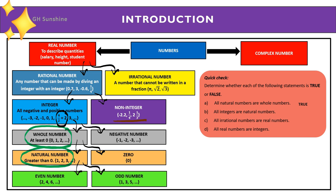Second question: all integers are natural numbers. Looking at the diagram, integers include more than just natural numbers, so the answer is false. Third question: all irrational numbers are real numbers — the answer is true. Fourth question: all real numbers are integers — the answer is false.